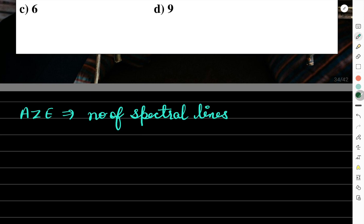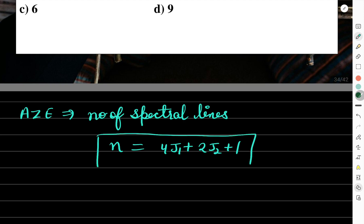The formula for the number of spectral lines in the anomalous Zeeman effect is: N = 4j₁ + 2j₂ + 1. This gives the number of spectral lines for a transition in the anomalous Zeeman effect.